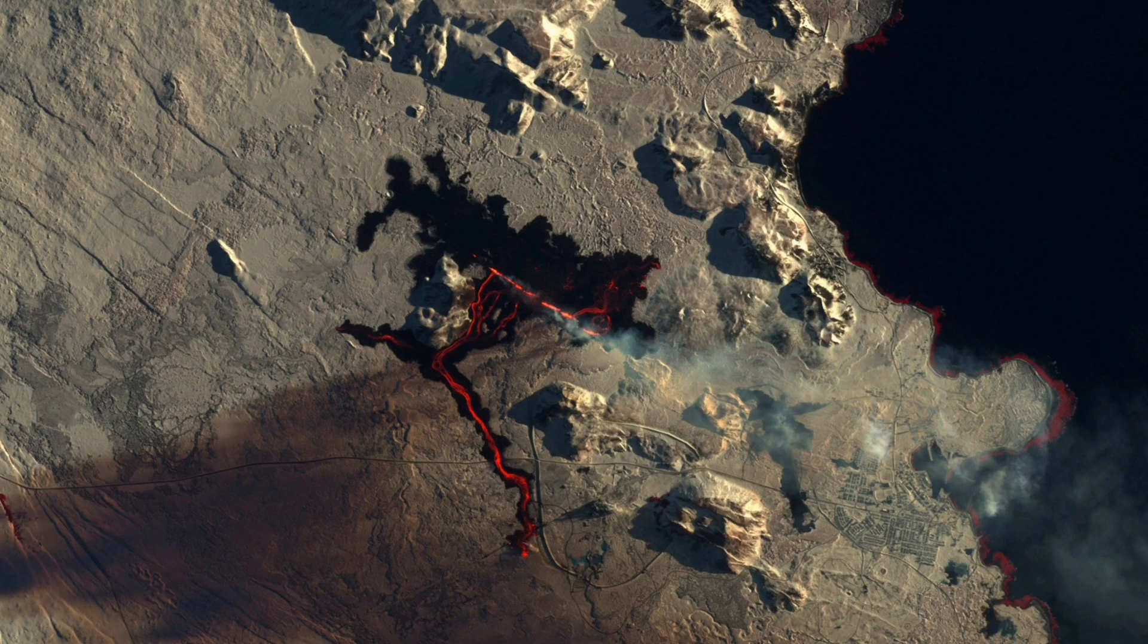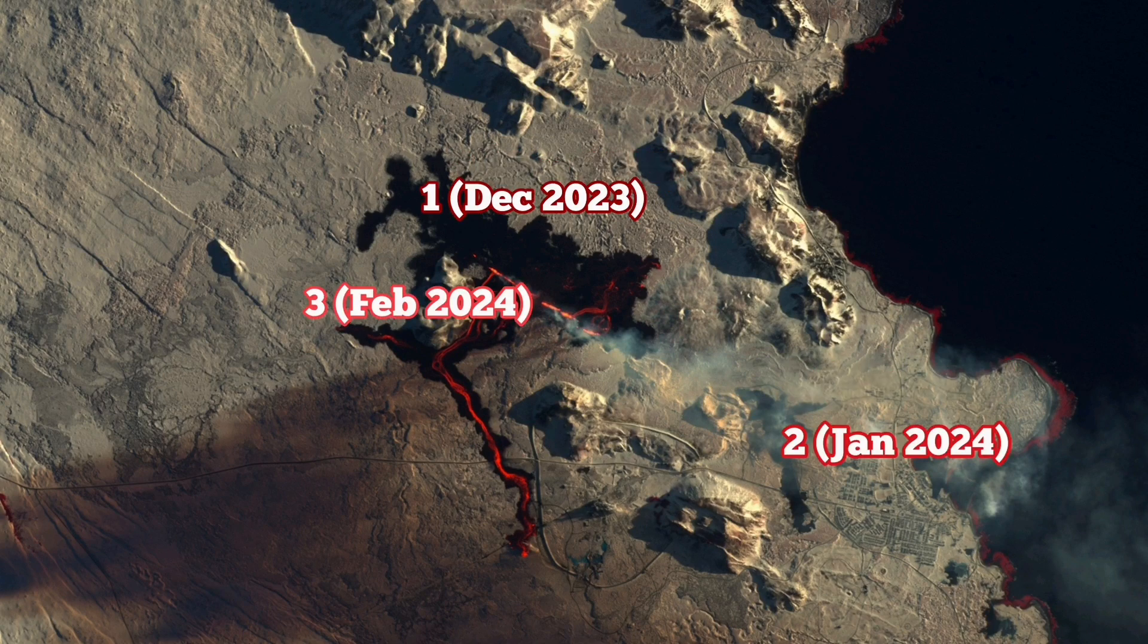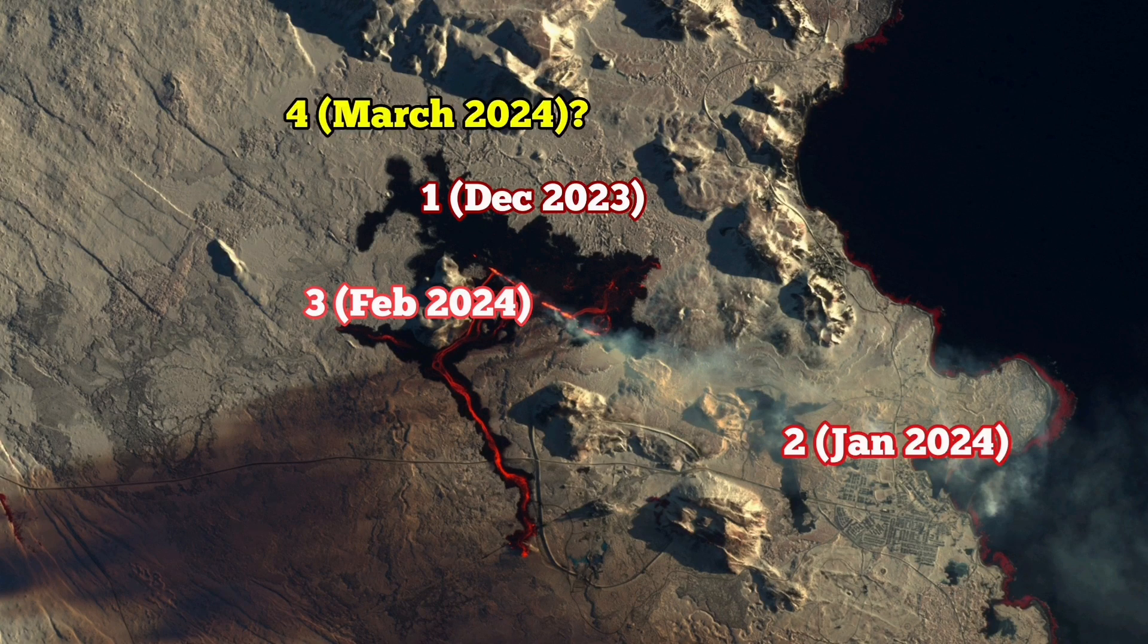As you can see in this satellite image I'm showing you now, the location of December 1st, 2023 was near Sundhnúkar crater, then north of Grindavík between Hagafell and Grindavík in January 2024, February 2024 again in Sundhnúkar crater. And I believe in March 2024 we will have another eruption to the north of the current location.